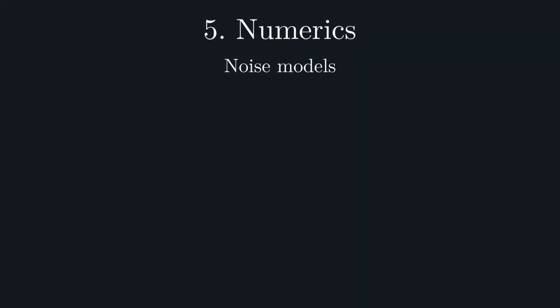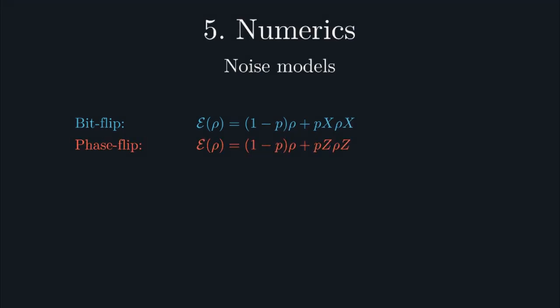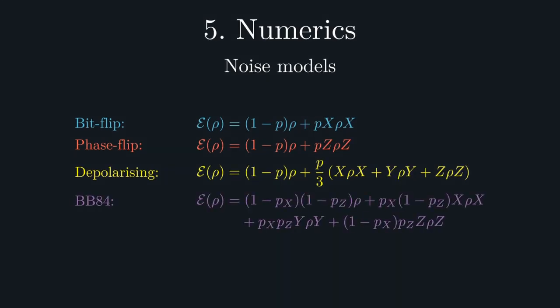Firstly, the bit flip channel, which randomly applies a Pauli X with probability P. The phase flip channel, which randomly applies a Pauli Z. And finally, the depolarizing channel, which randomly applies a non-trivial Pauli. We note that all of the codes we're going to consider are CSS, allowing them to simultaneously correct X and Z noise, meaning that the bit flip and phase flip data we get also tells us about BB84-type channels, that consist of both bit and phase flip simultaneously.